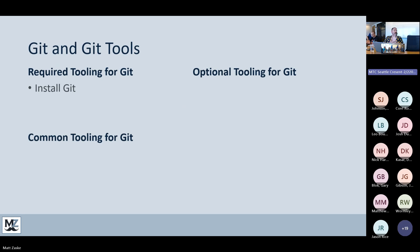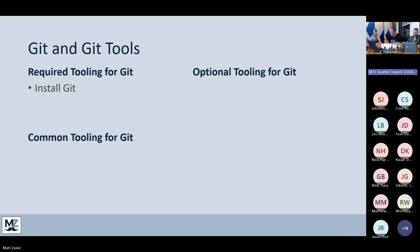A quick slide about Git and Git tools. The required tooling is simply to install Git. Once you have installed Git, you have everything you need to use it. When you install Git, it will come with Git Bash, which is the command line option. Most people, though, don't actually use Git Bash.